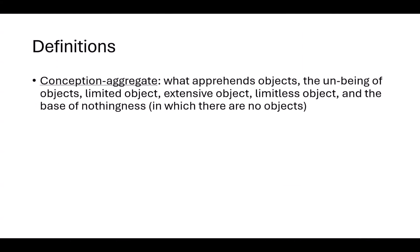Moving on, we get to the conception aggregate. From Asanga's Abhidharmasamuccaya, the conception aggregate is what apprehends objects, the non-being of objects, limited object, extensive object, limitless object, and the base of nothingness in which there are no objects. What it boils down to is that this is often characterized as our labeling capacity for things, which is why we have the translation 'conception.' We're perceiving something, and this is the aggregate that allows us to identify a chair or a tree or something like that. So it's the part that labels sensory perceptions.